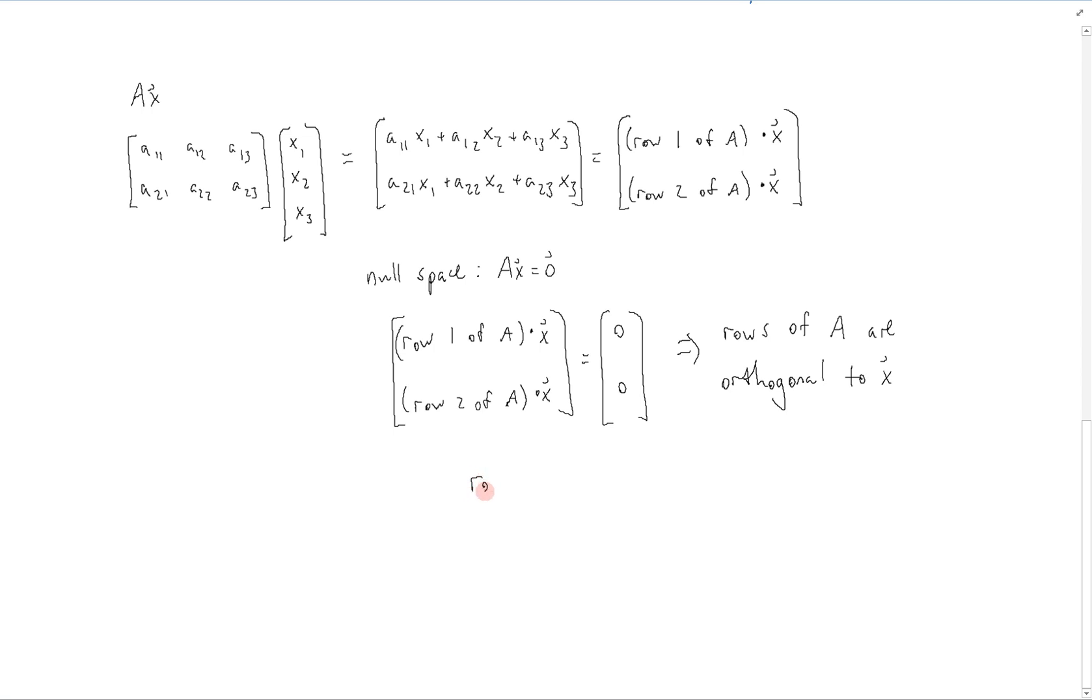So again, we know that the rows of A define the subspace row A. We also know that X such that AX equals 0 defines null A, the null space of A. And therefore, from this, we can see that the null space of A is actually the orthogonal complement of the row space, the row space of A.